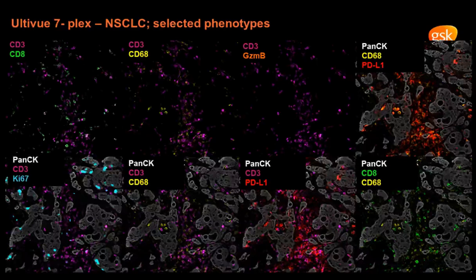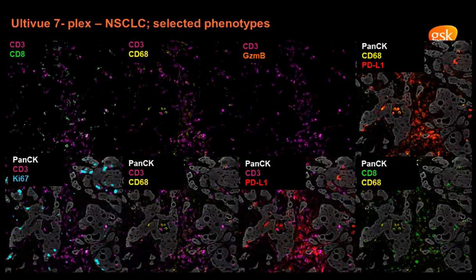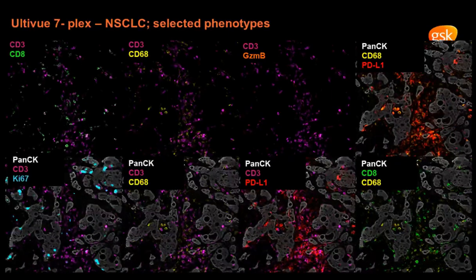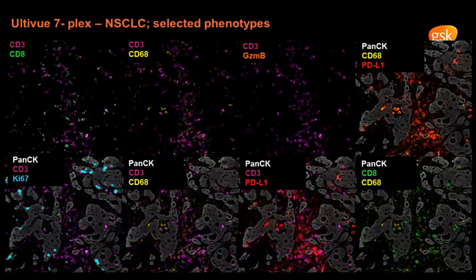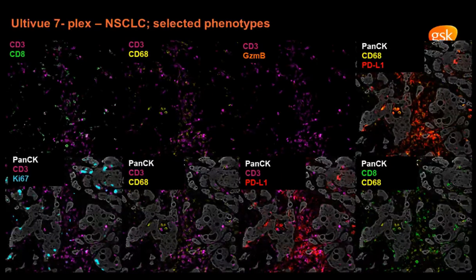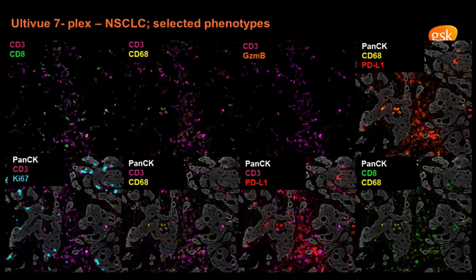This is another example from non-small-cell lung cancer with selected phenotypes. As shown on the images, you can see very nice co-localization of CD3 and CD8, PD-L1, CD68, and Pan-CK. You can also see the spatial relationship between these immune cells and the tumor.